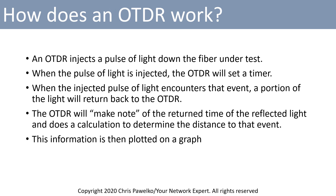So how does an OTDR work? An OTDR simply injects a pulse of light down the fiber under test. When the pulse of light is injected, the OTDR will set a timer. And then when the injected pulse of light encounters an event in the fiber, a portion of the light will return back to the OTDR. When that portion of the light returns back to the OTDR, it will make a note of the return time of the reflected light. From this, it does a calculation to determine the distance to that event, and the information is then plotted on a graph.